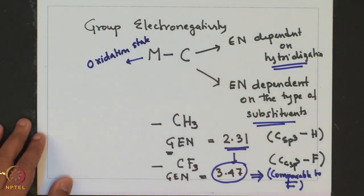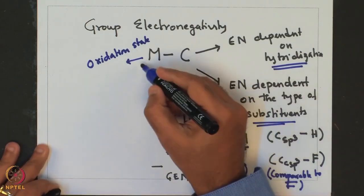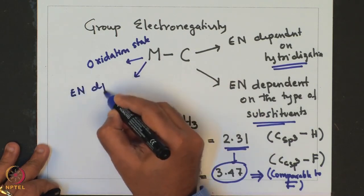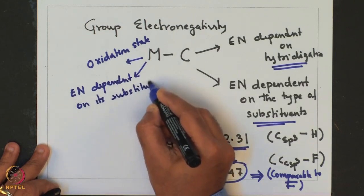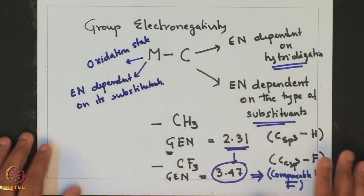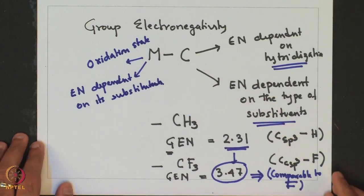Similarly, just as carbon's electronegativity is dependent on its substituents, group metal electronegativity can also be dependent on its substituents. So what we are saying is that this bond being polar, the polarity depends on many other factors beyond just electronegativity.